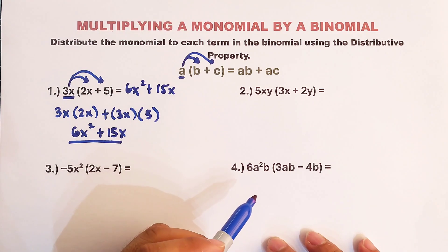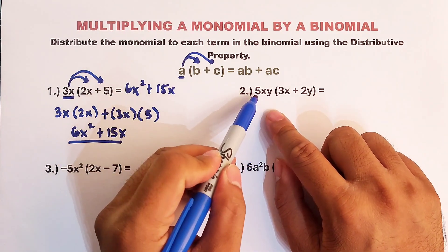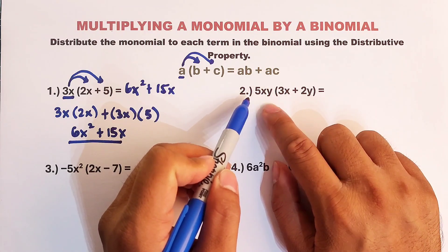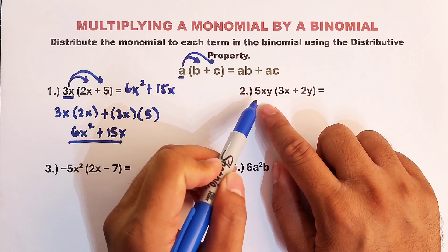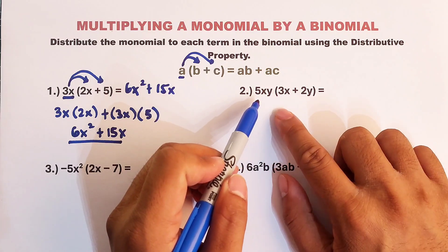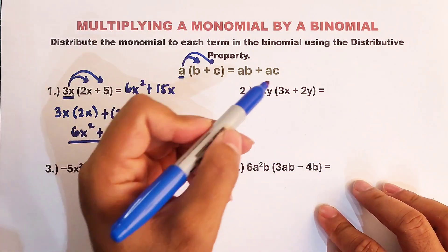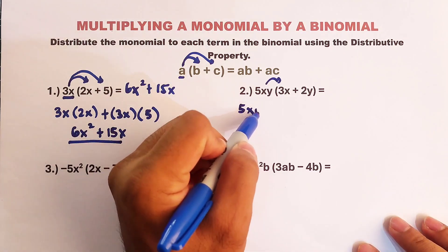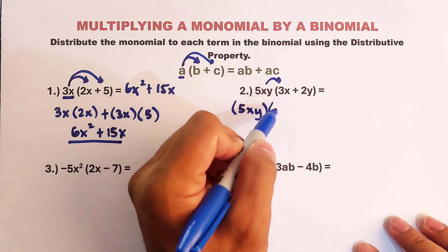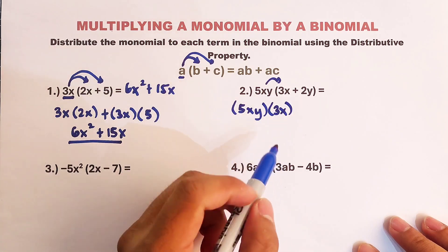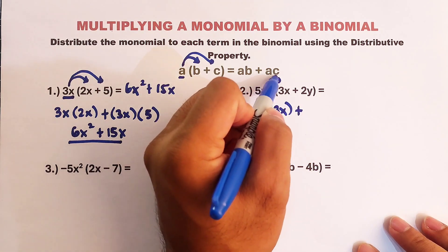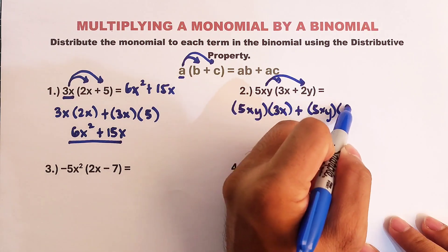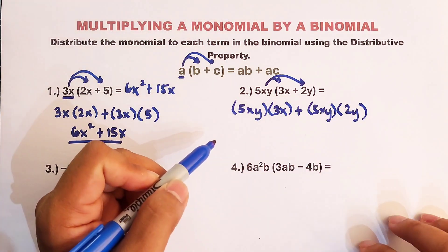Now let's move on with item number 2. We are given 5xy — this is a monomial, though it has two different variables, it is still a monomial — times (3x plus 2y). We will distribute 5xy: that is 5xy times 3x, plus 5xy times the second term, which is 2y.